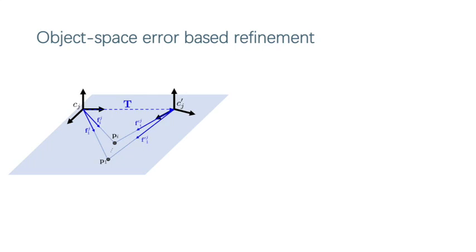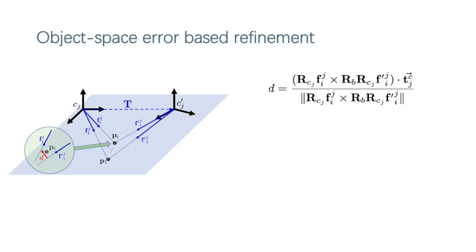It is to be understood as an efficient replacement of two-view bundle adjustment. We define the object-space error as the distance d between the rays f_ij and f'_ij.